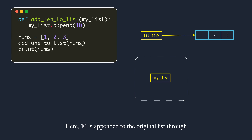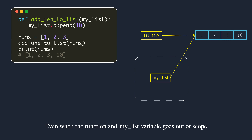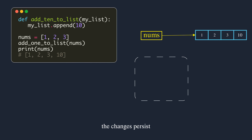If we actually wanted to change the original list from within the function, we need to use the methods defined on the object. For example, appending 10 to the original list through the reference in the function — even when the function and the my_list variable go out of scope, the changes persist.